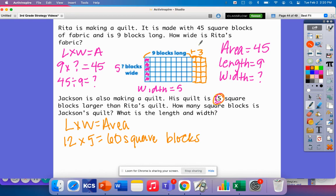Now how we can check that is Rita's was 45 blocks and we added 15. So what should that equal? It should equal our 60, correct? So I have 45 and I get 60. So I know that Jackson's quilt is 60 square blocks. The length equals 12 and the width equals 5.